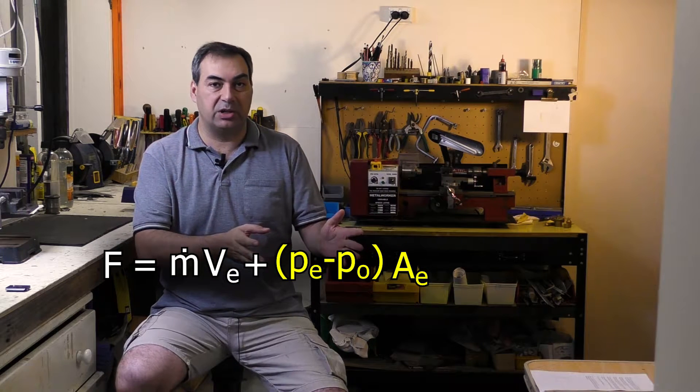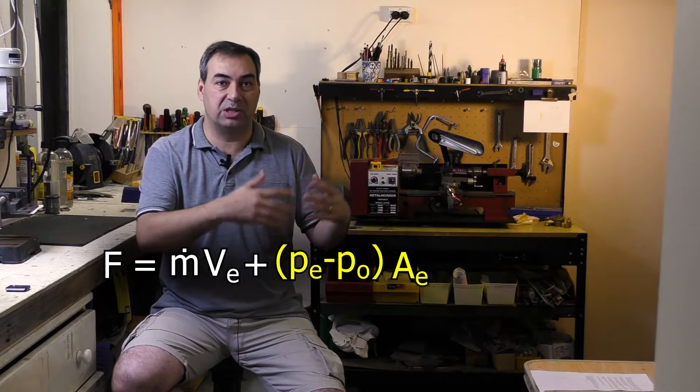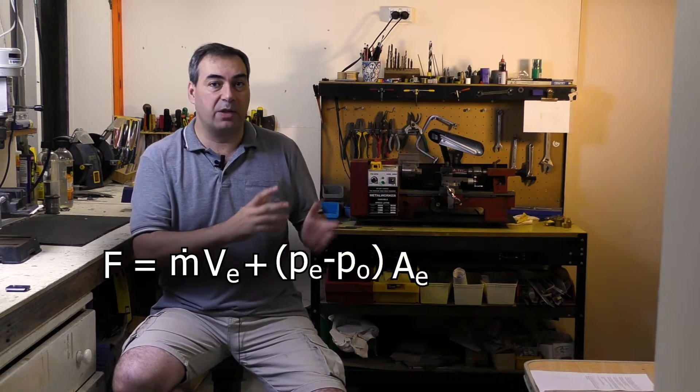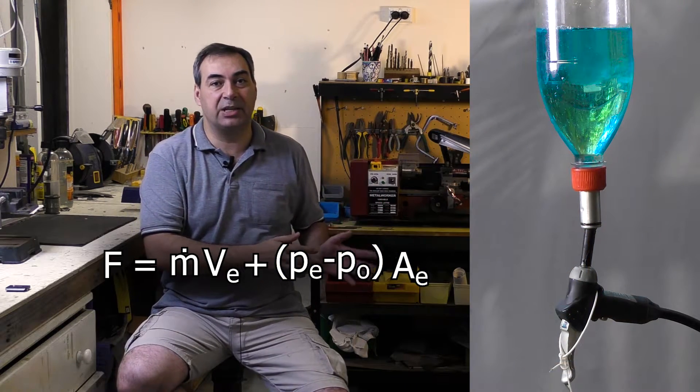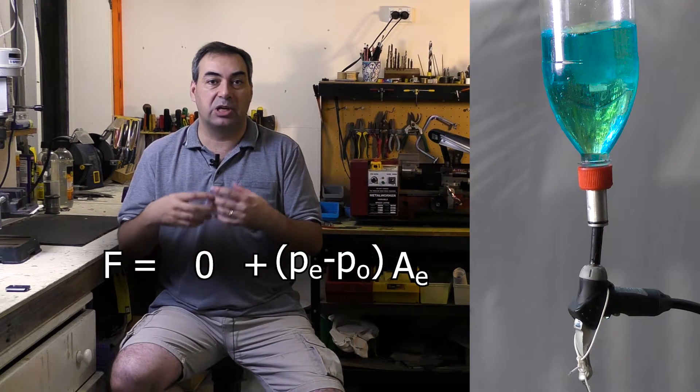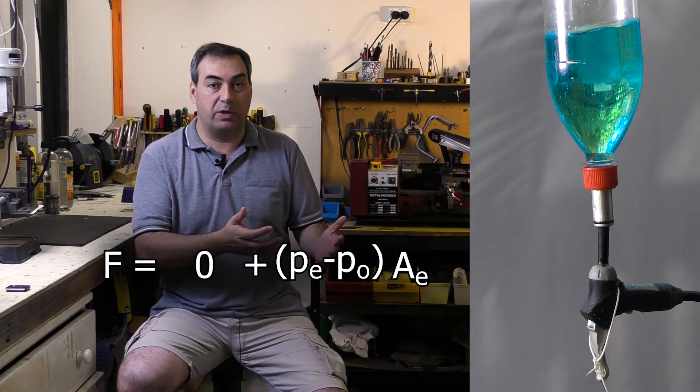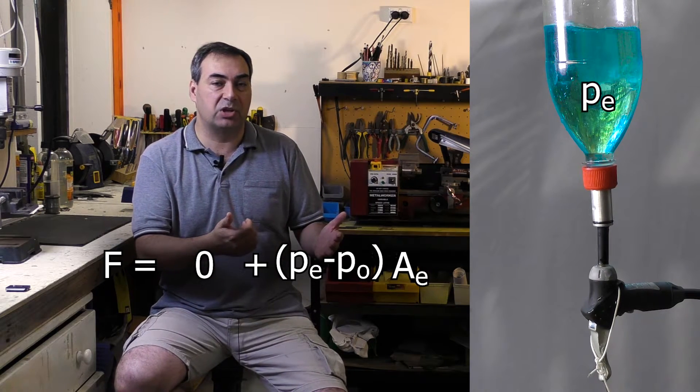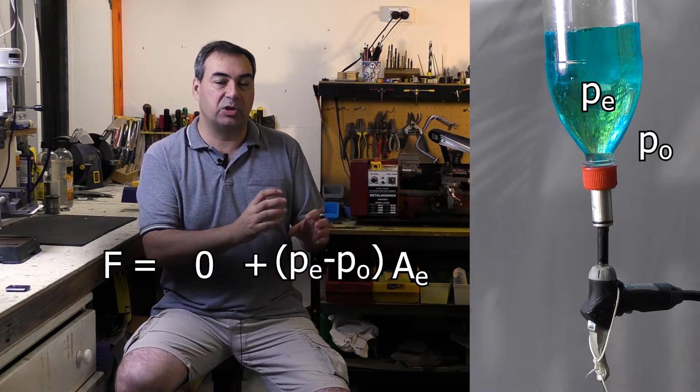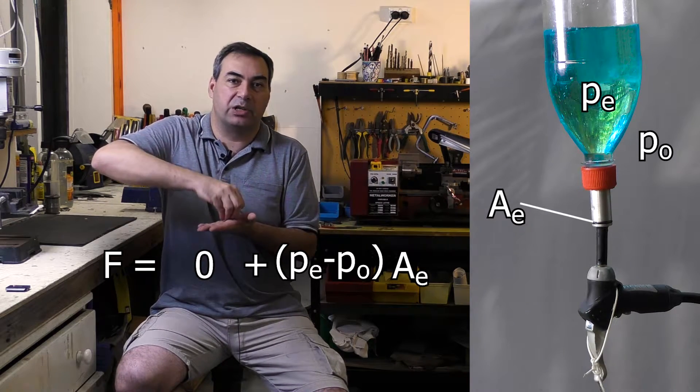And over here is the pressure thrust and that relates to the exit pressure versus the ambient pressure. So while the rocket is sitting on the pad pressurized, this term is zero because there's no flow out of the nozzle and so we end up with the pressure of the inside versus the outside times the nozzle's cross-sectional area and that's the force of the rocket trying to get off the pad.